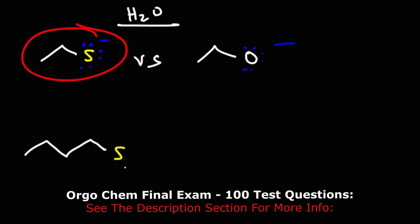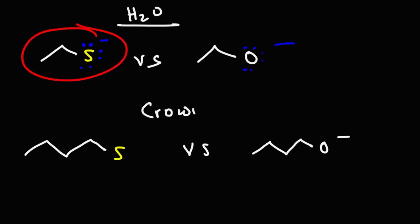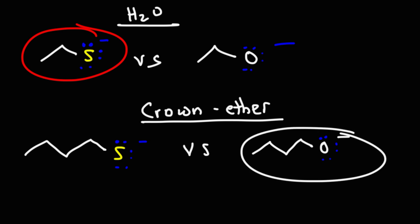Now let's say we have a similar situation but in an aprotic environment — for example, if this was dissolved in a crown ether, which is an aprotic solvent. In that case, oxygen with a negative charge will be more nucleophilic than a sulfur atom with a negative charge.